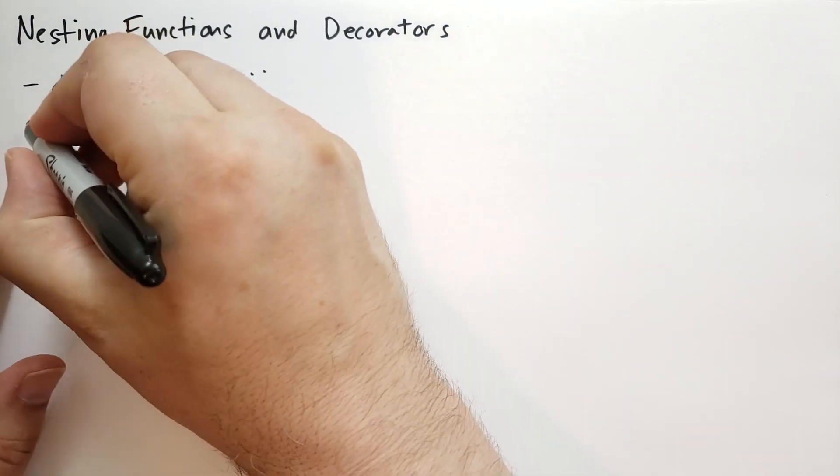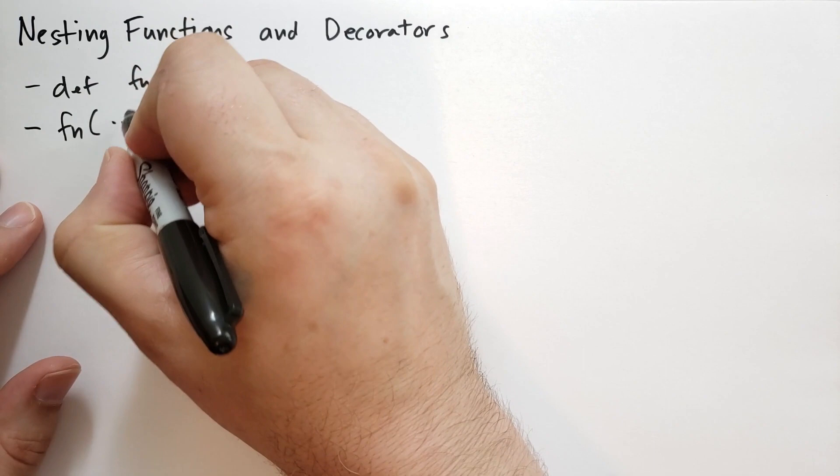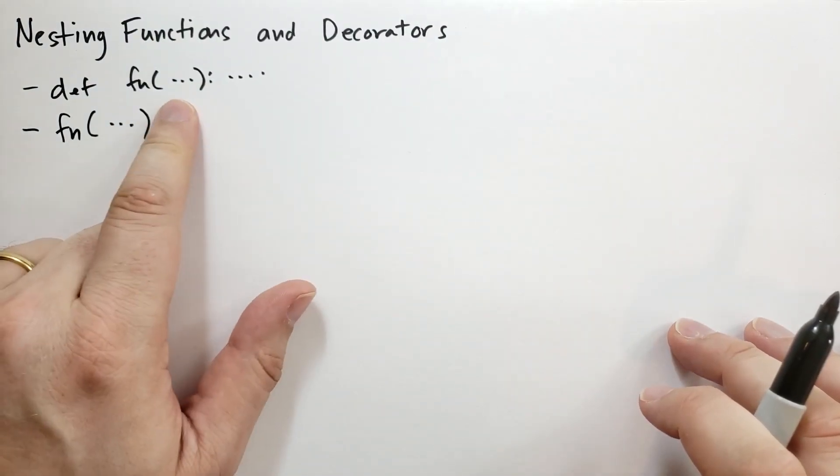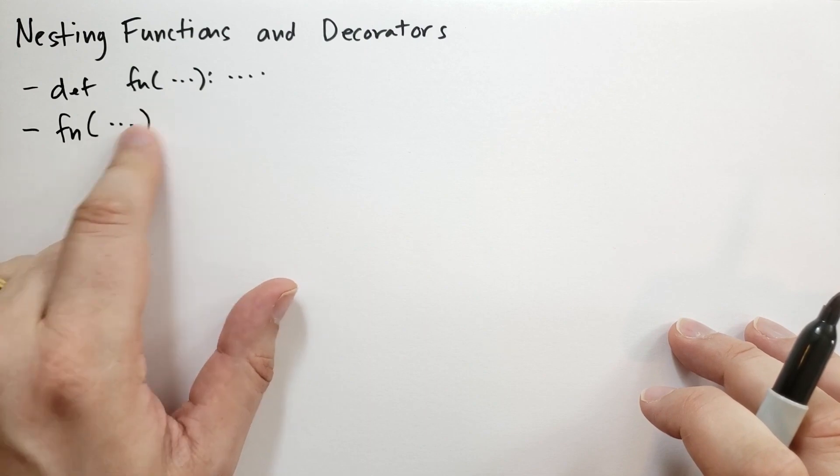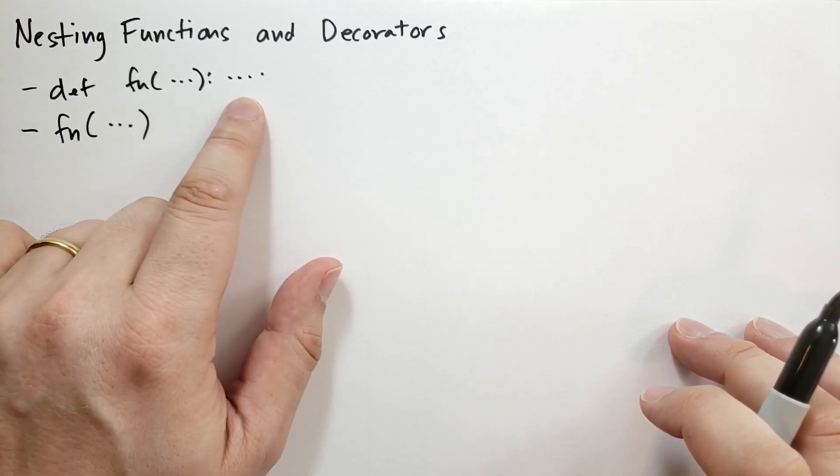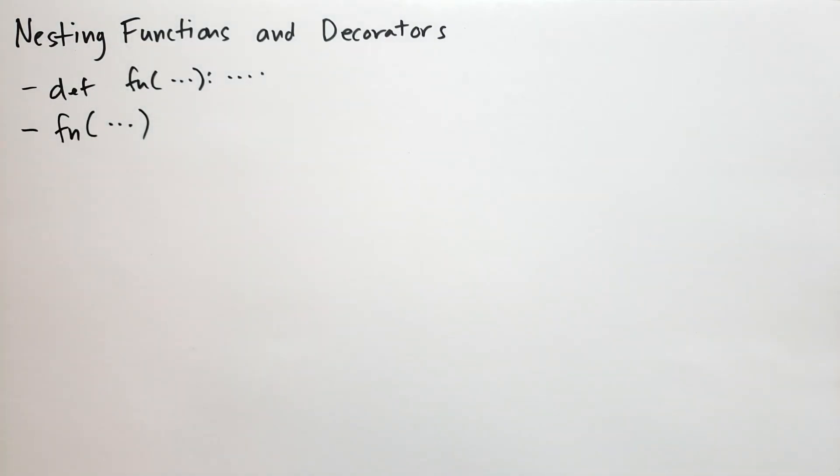And when we call a function, we'll basically call the function, do a parenthesis, and then pass in some values for the parameters. And this is going to assign the parameter names to those values that you passed in, create a frame, put that frame on top of the stack, and then execute the function in that frame, in that new local namespace.